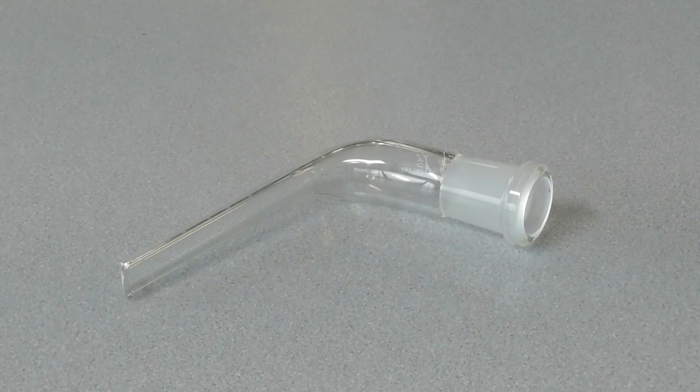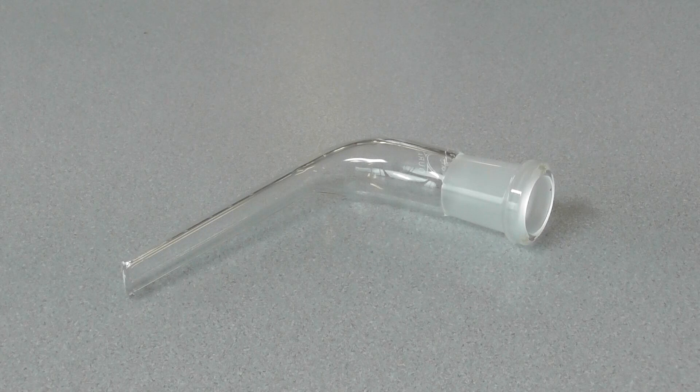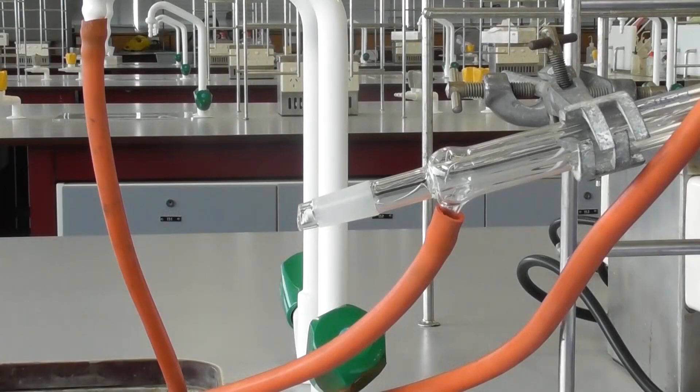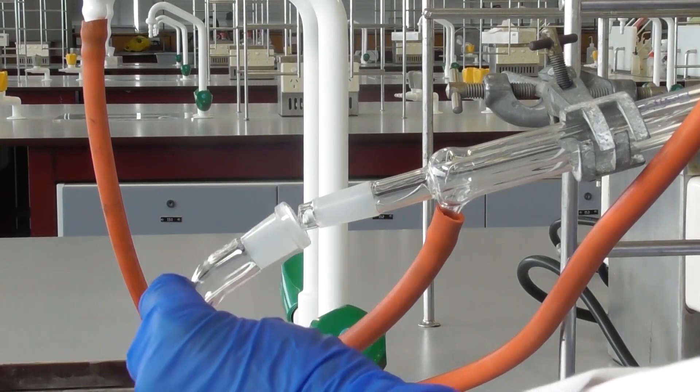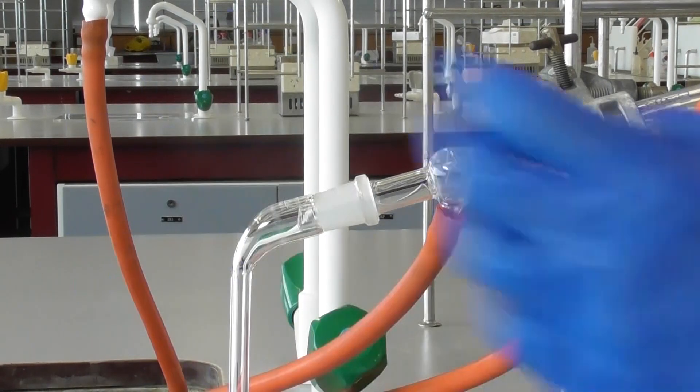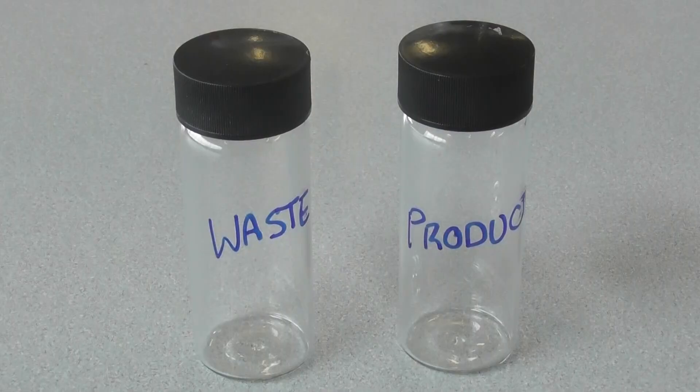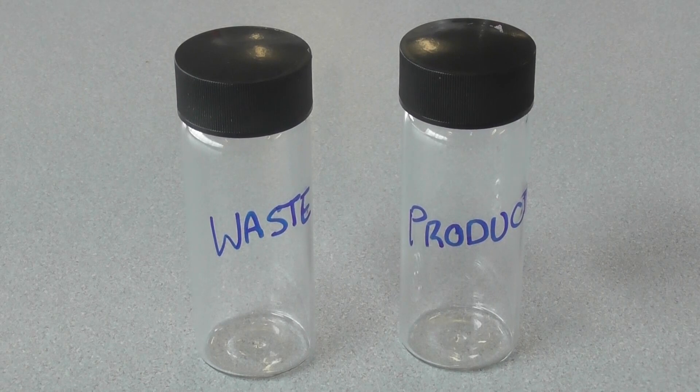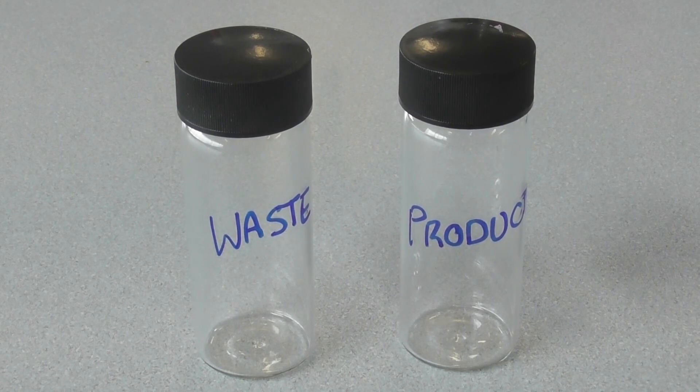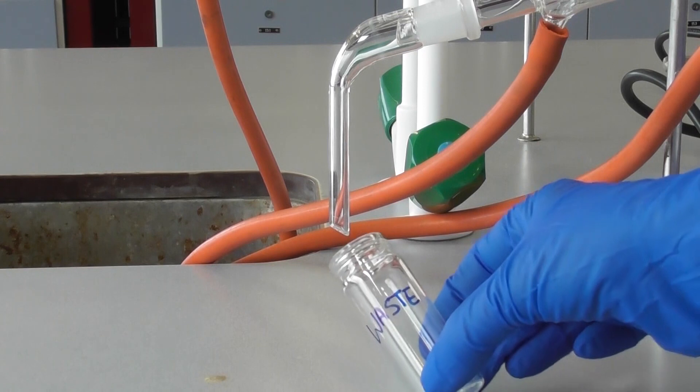The next piece you will need is a receiver. This should be fitted to the end of the condenser. You will also need labelled containers to collect both your desired product as well as any waste that condenses out. Place your waste container underneath the receiver.